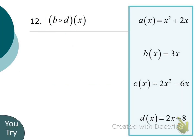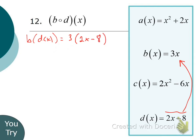Number 12: B of D of X. Stop the video, take a couple minutes, give it a shot. We take D of X, which is 2X minus 8, and put it in for the X in the B function. So we get 3 times (2X minus 8). Distributing the 3 gives 6X minus 24. And you're done — that's B of D of X equals 6X minus 24. Homework is in Canvas; make sure you get that done by next time.